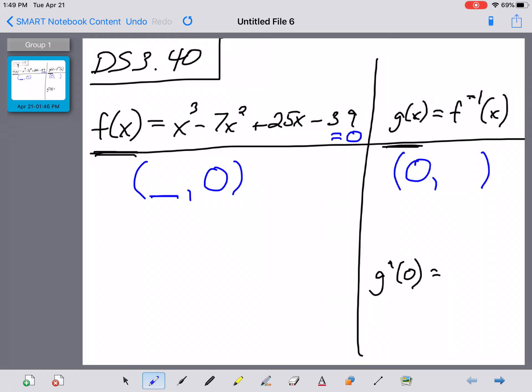I'm thinking about it, 0 I don't think is going to work, 1 does not look like it's going to work. I'm wondering if it's maybe 2. The 2 cubed would be 8, minus 4 times 7 would be 28, and a plus 50, and then a minus 39. Would that get a 0?